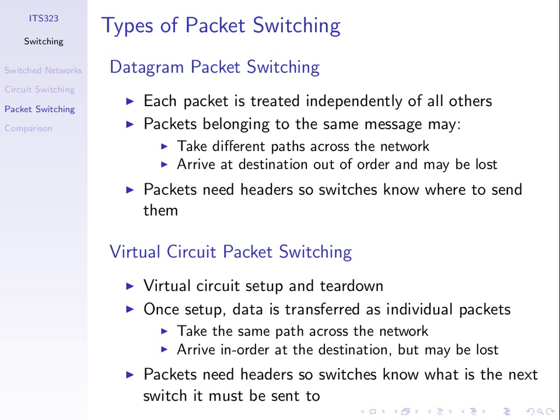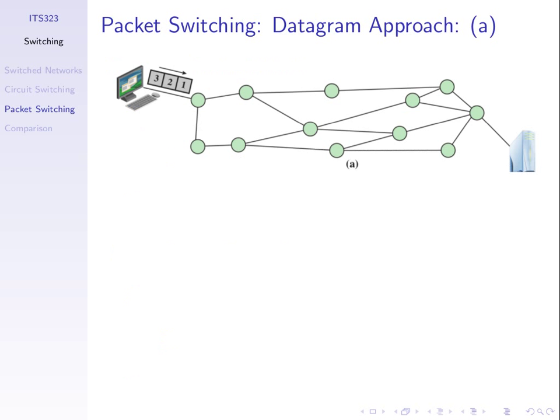There are two types of packet switching: datagram packet switching and virtual circuit packet switching. In datagram packet switching, the source station breaks the original data into multiple packets — sometimes called datagrams. In this example, three packets are created numbered one, two, and three. The source station sends them to the first node in order: packet one, packet two, packet three. That node then sends those packets to the next node, following some path through the network chosen by the nodes.